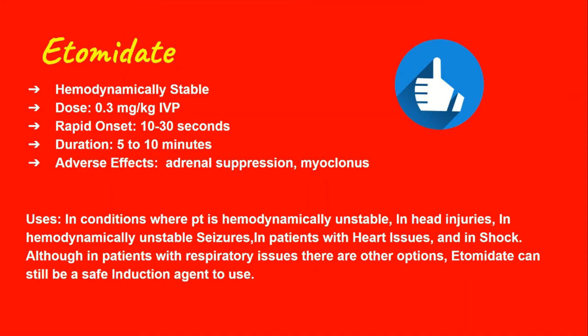As far as adverse effects, I've definitely seen myoclonus — jerking-like movements that kind of mimic a seizure. But with RSI, you give a paralytic right afterwards so the patient can't move either way. So even if the patient was going to get myoclonus, you give the paralytic so you probably won't see it. But it is a possible side effect with using etomidate.